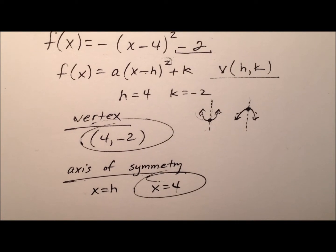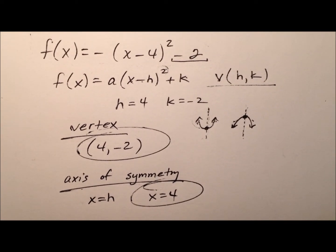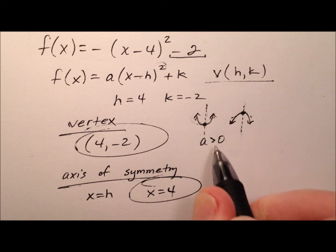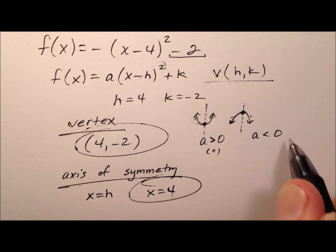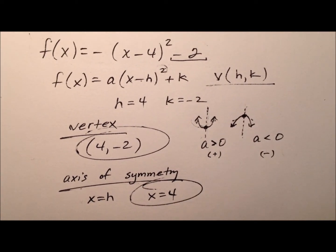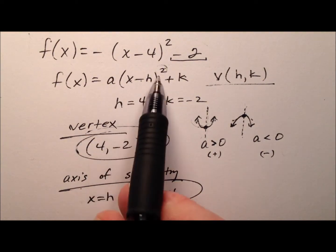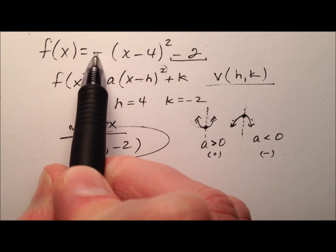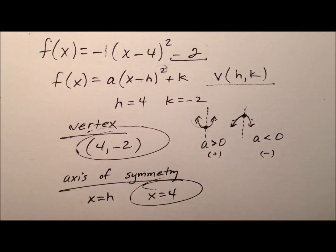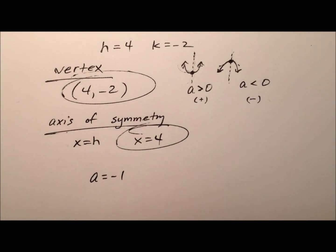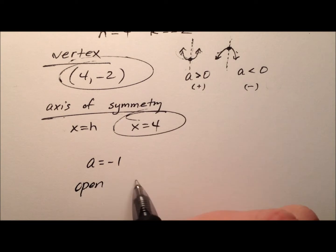Next, let's talk about whether the parabola opens upward or downward. It will open upward if our a value is greater than 0, or positive. It'll open downward if our a value is less than 0, or negative. The a value is the number out front of our squared term. It looks like we have just a negative, or in fact a negative 1. So our a value is going to be negative 1, which means the graph of the parabola will open downward.